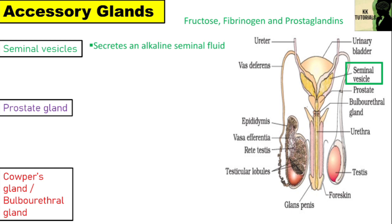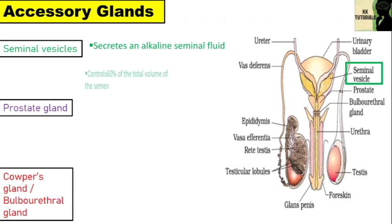The prostaglandins stimulate reverse peristalsis in the vagina and uterus, aiding faster movement of sperms towards the egg in the female body. The seminal vesicle contributes about 60% of the total volume of semen.